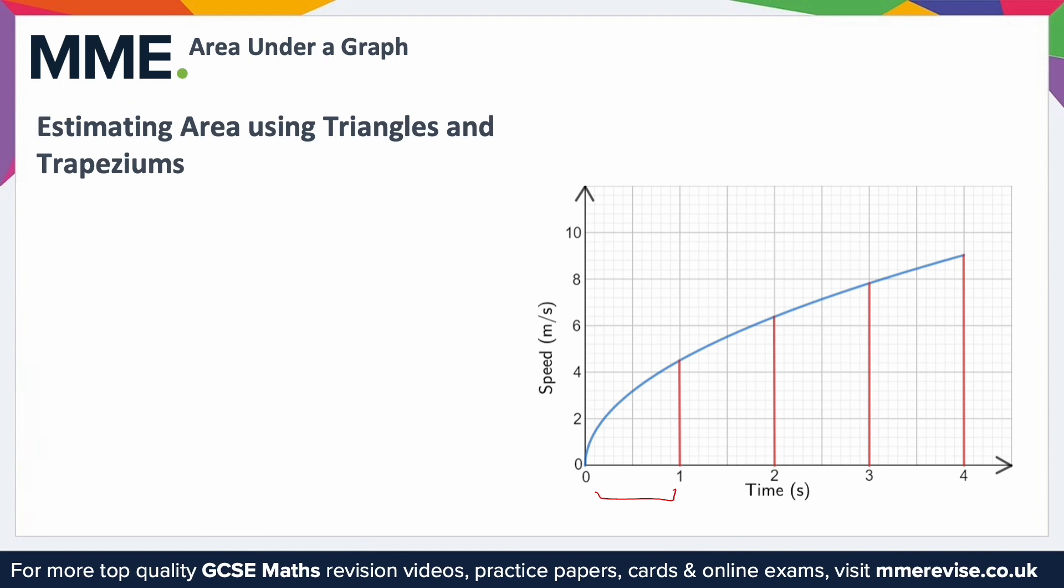In that case, just take the total length that it spans. For example, if this said eight strips instead, I know that this goes from zero to four, so splitting that into eight, it would make sense to split it every 0.5 seconds. All I've done is four divided by eight. So split it into as many strips or intervals as the question specifies. In this case, we're going to use four strips.